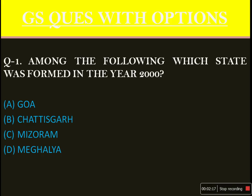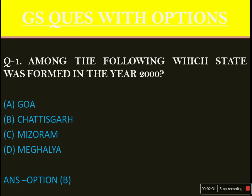The first question was: among the following, which state was formed in the year 2000? As you all know, three states were formed in 2000. The correct answer is option B — Chhattisgarh. Apart from it, Jharkhand and Uttarakhand were also formed.